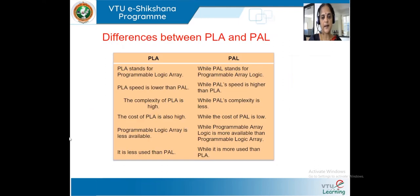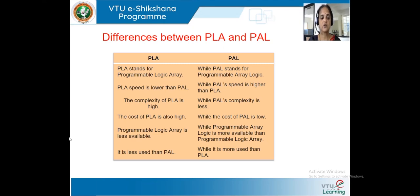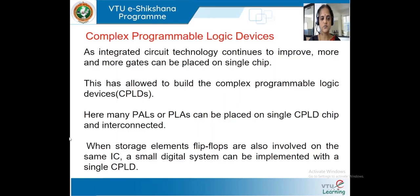Comparing PLA and PAL: PLA has lower speed compared to PAL. The complexity is much higher in PLA since both AND and OR gates need to be programmed, making it more expensive. PAL is less expensive because only one set of gates needs to be programmed. People generally prefer PAL over PLA, so PLA is less commonly available. In summary, PLA is less used and PAL is more used.